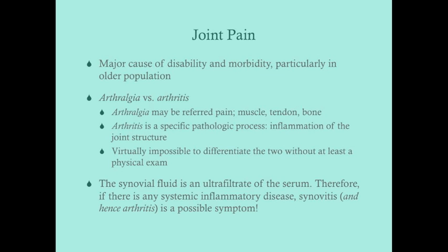Joint pain is a major cause of disability and morbidity, particularly in the older population. Osteoarthritis is a major cause of early retirement and disability. Arthralgia versus arthritis: arthralgia is any kind of pain referred to the joint — it could be referred pain, muscle pain, tendon pain, or bone pain. It doesn't have to originate from the joint itself.